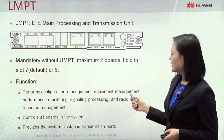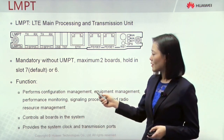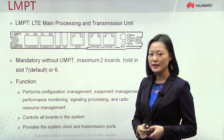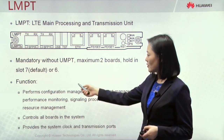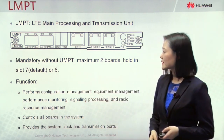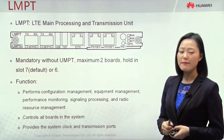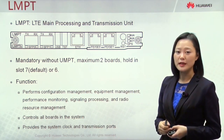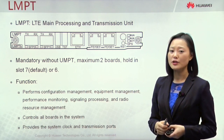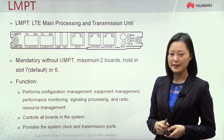The LMPT is normally configured in Slot 7 as priority, and can also be installed in Slot 6. Note that LMPT can only be configured in BBU-3900 and cannot be installed in BBU-3910.